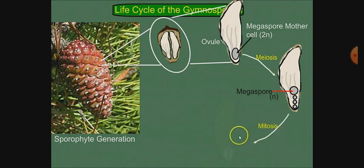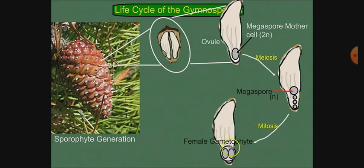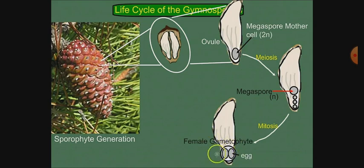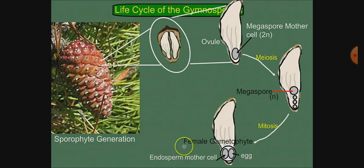Inside this functional megaspore, mitotic divisions occur. These divisions of mitosis result in complete cells. These include the egg cells. One cell is the egg, and the other cells are the endosperm mother cells. The endosperm mother cells provide nutrition to the egg. This structure is the female gametophyte.